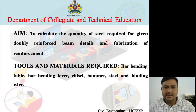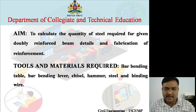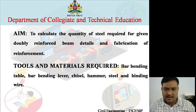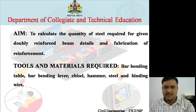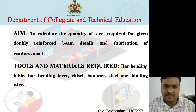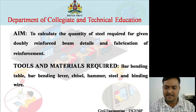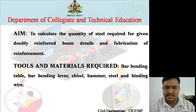The aim of the experiment is to calculate the quantity of steel required for a given double reinforced beam and fabrication of reinforcement. Tools required are bar bending table, bar bending lever, chisel, hammer, steel, and winding wire. These are the tools and materials required.